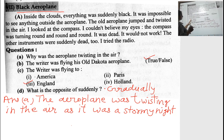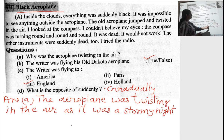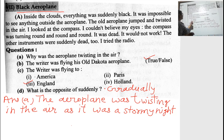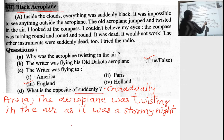Now let's see the question and answer. A: Why was the aeroplane twisting in the air? The answer is: the aeroplane was twisting in the air as it was a stormy night. B: The writer was flying his old Dakota aeroplane — true or false? The answer is true. The writer was flying to: 1 America, 2 Paris, 3 England, 4 Holland. The right answer is 3 — England. What is the opposite of 'suddenly'? 'Suddenly' means coming as a surprise, and the opposite is 'gradually' — coming slowly and slowly.